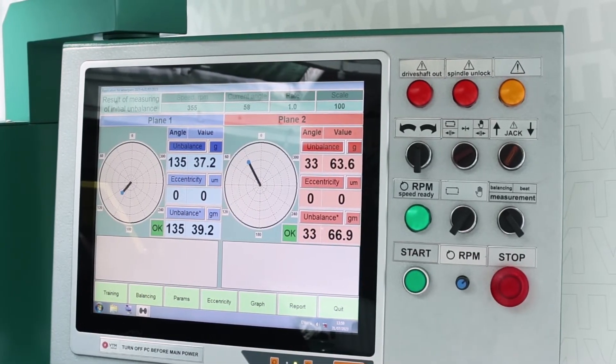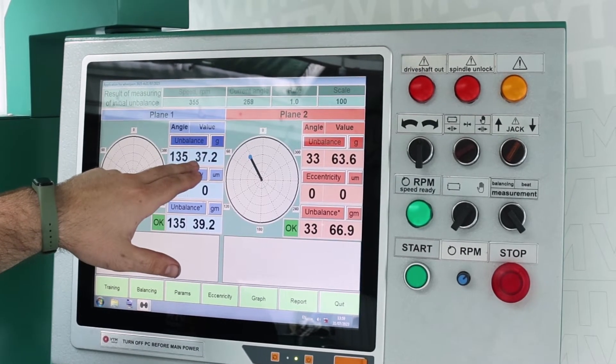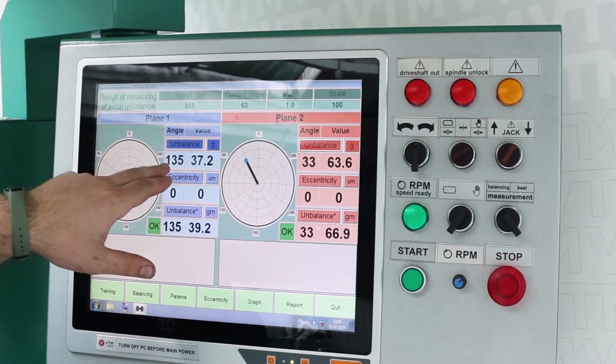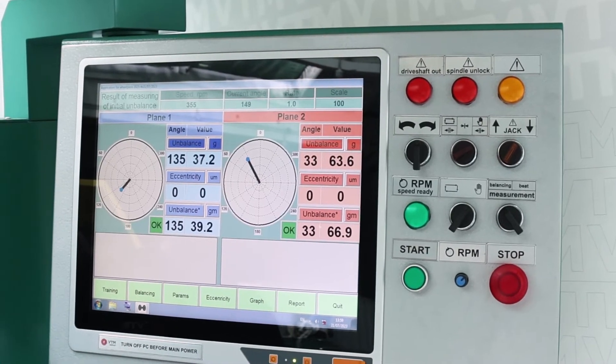Now we see the results of the setup. It is displayed on the first plane an imbalance of 37.2 grams at an angle of 135 degrees, and on the second plane the value of 33 degrees.